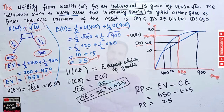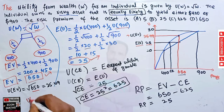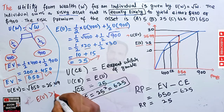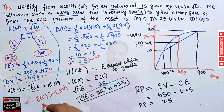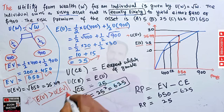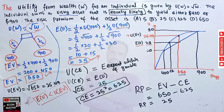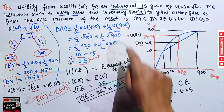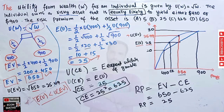Here we can see that the expected utility from the gamble (25) is less than the utility of the expected value (√650 ≈ 25.49). When the expected utility is less than the utility of the expected value, we confirm the person is risk-averse.